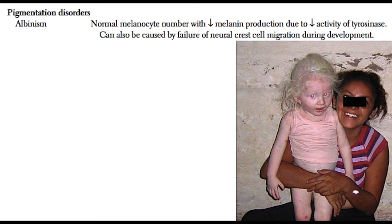There are two types of albinism you should know about on Step 1. The first is called ocular albinism, which is an X-linked disorder. As the name implies, these patients have albinism limited to the eyes — they have normal melanin in their skin but no melanin in their eyes.